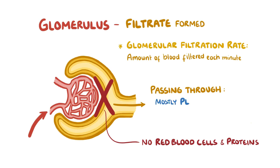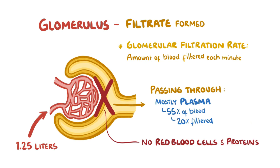Right from the start, what passes through the glomerulus is mostly plasma, which normally makes up about 55% of blood. What's more, the glomerulus only filters about 20% of that plasma in one go. So of the around 1.25 liters the heart pumps out every minute, the glomerular filtration rate is normally approximately 125 milliliters per minute.